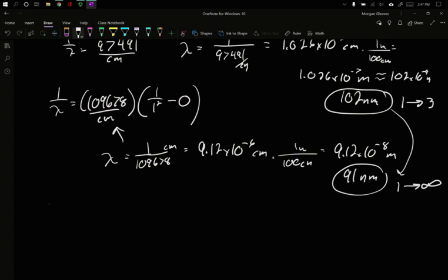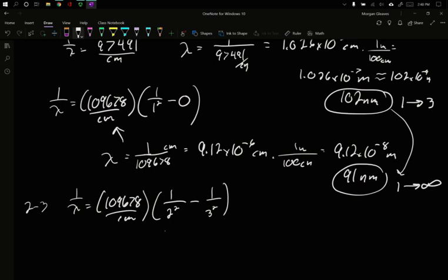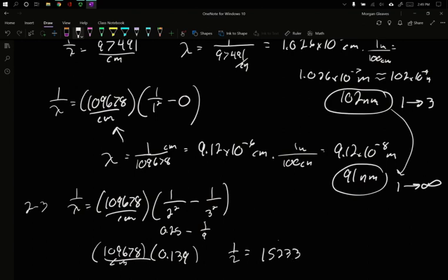Let's do one more, let's look at 2 to 3. Let's look at a little bit of those differences in energy here. So 1 over lambda, 109,678 per centimeter, 1 over 2 squared going up to 1 over 3 squared. This is going to be 0.25 minus 1 ninth, 0.139. Or 1 over lambda is 15,233. And so my lambda is 6.6 times 10 to the minus 5 centimeters, or 6.6 times 10 to the minus 7 meters, or 660 nanometers. That was our 2 to 3 transition.